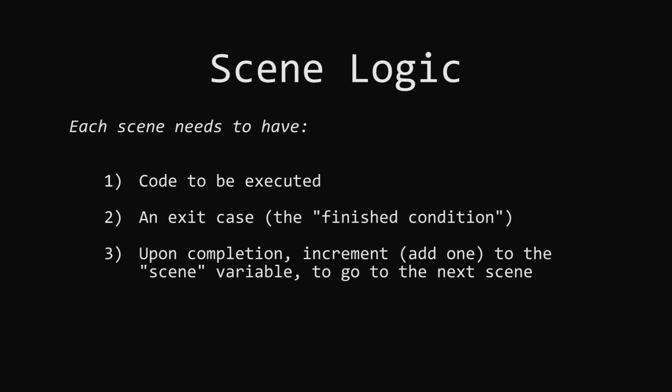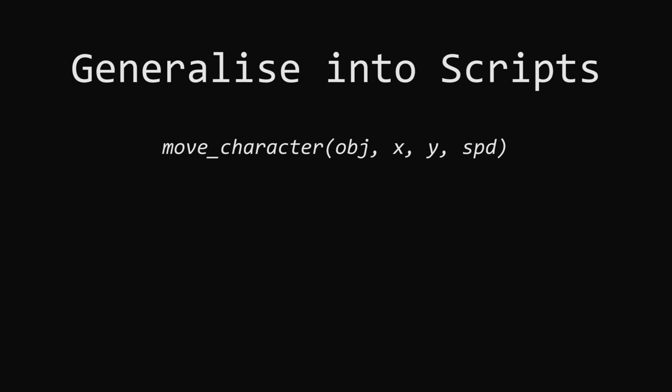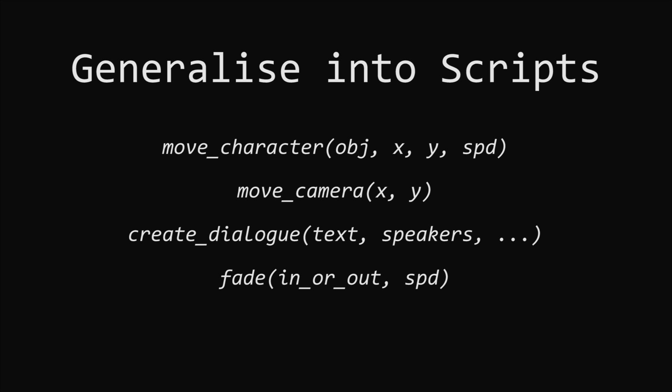Essentially, this is all the logic you'll need to have a working cutscene system. Ideally you'll want to generalize this as much as possible. Instead of having specific code for moving every time, you could make use of some reusable scripts that will handle the movement for you — all you have to do is give it an object, an x and y position, and the speed at which it moves. You could reuse that script every time you want to move an object. The same goes for moving the camera, starting dialogue, and fading in and out. You'll want to make scripts that perform the action, wait for their exit case, and then increment the scene variable.